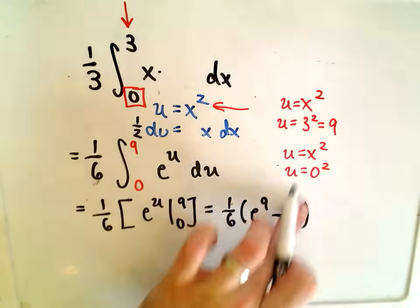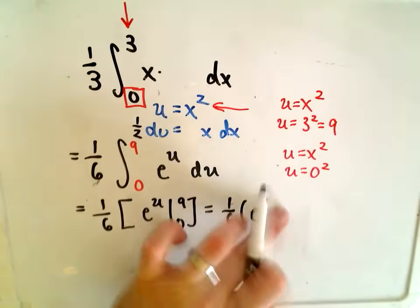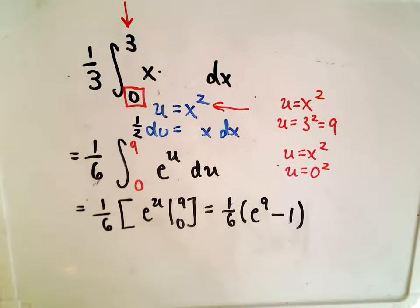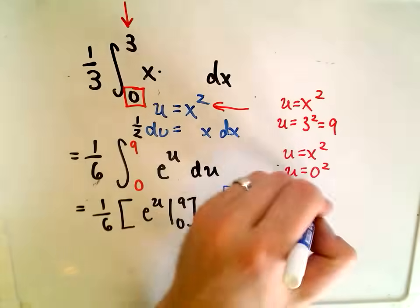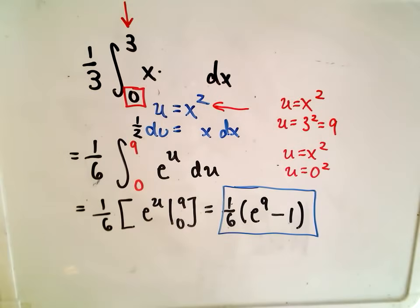Remember, e to the 0 is simply 1. So we finally calculated our integral, one-sixth times e to the 9th minus 1. Alright, I hope this example makes some sense. If this is the first one, like I said, you may want to look at the other. It's a little more general. It's just another example of setting it up. Hopefully the integration's not too bad, but if you have questions, feel free to post them. Hopefully either me or somebody else can help point you in the right direction. Alright, I hope this makes some sense, and good luck out there.